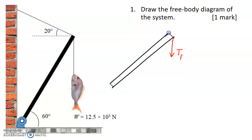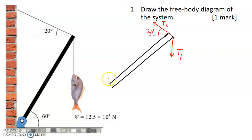We have the supporting cable from the rod to the wall, and this one is going to be TC. The angle will be 20 degrees. At the other end of our rod, there will be two forces due to the normal reaction, which will have two components: the X component NX, as well as NY.